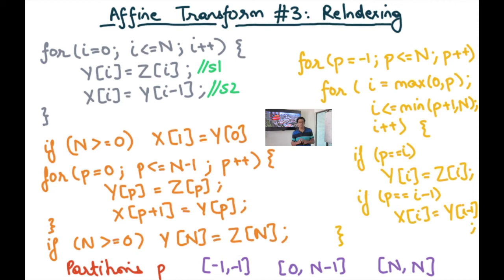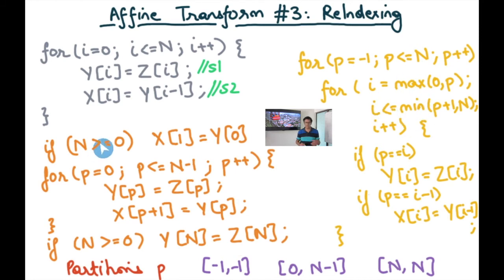Specializing the code for each of these three partitions: for p equals minus 1, I only execute S2. The code I get is: if n is greater than or equal to 0, x1 equals y0. The condition n >= 0 arises because p iterates from minus 1 to minus 1 and the inner loop executes one iteration of S2 only when n >= 0. Substituting p equals minus 1 into x_i equals y_{i-1}, with i becoming p plus 1, gives x1 equals y0.